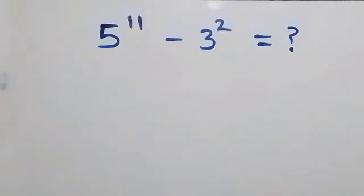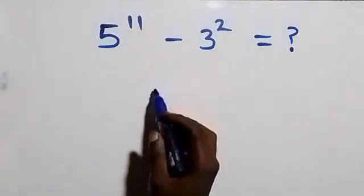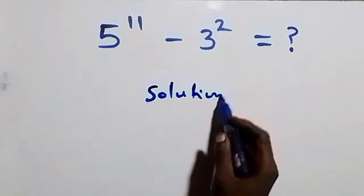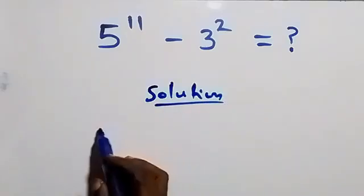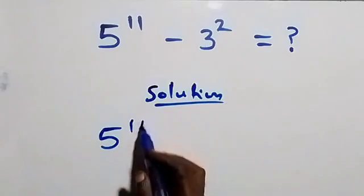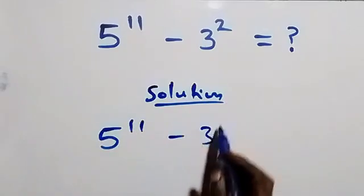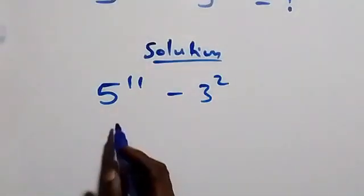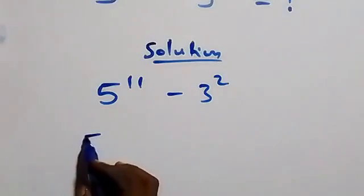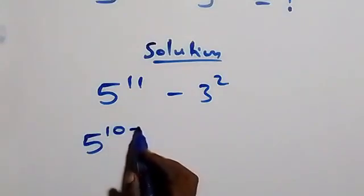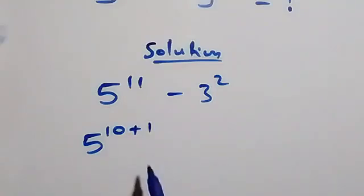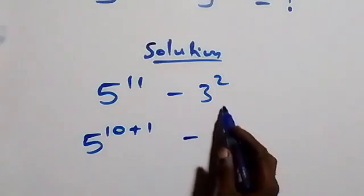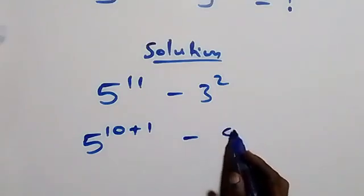Hello, you are welcome. How to solve this problem: the solution starts from what we have, which is 5 raised to power 11 minus 3 squared. Here we can rewrite 5 raised to power 11 as 5 raised to power 10 plus 1. This is 3 raised to power 11, then minus 3 squared, that's 3 times 3 which is 9.